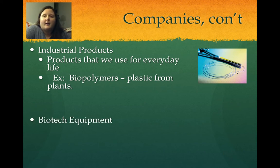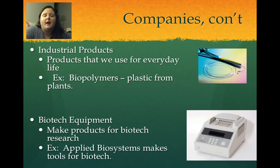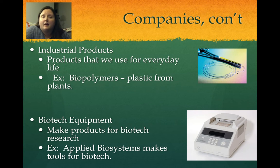Other biotech companies produce equipment — they're not necessarily making cool products but making the equipment needed to do all of this. They make products for biotech research. An example is Applied Biosystems, a local company that makes tools for biotech. The picture on the right is a thermocycler used for PCR, which makes millions of copies of DNA. If you take the biotech class, you'll be using a thermocycler.